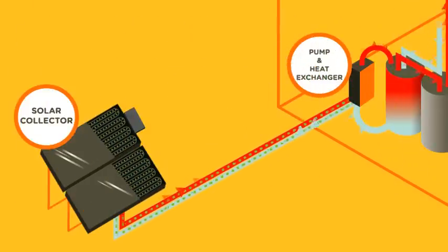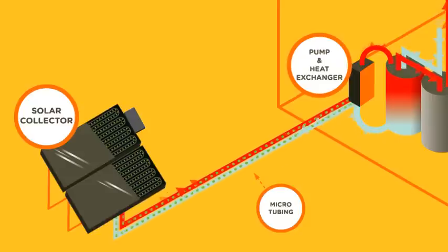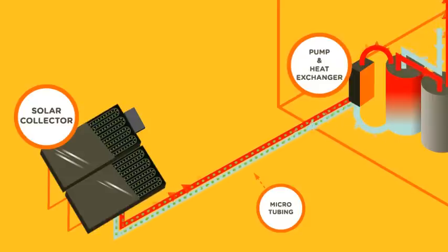The Sunward solar collectors and Sunward heat exchanger are connected by pre-insulated Sunward microtubing. These are 3/8 inch flexible copper lines and are insulated. For direct burial we have the Sunward easy bury microtubing which is our microtubing encased in 3 inch flexible black conduit.